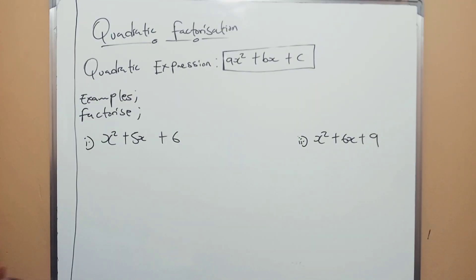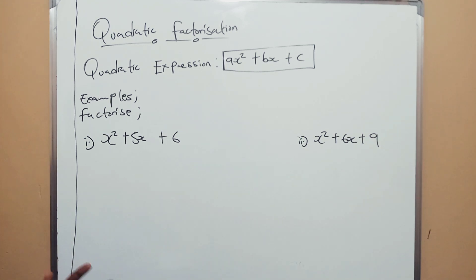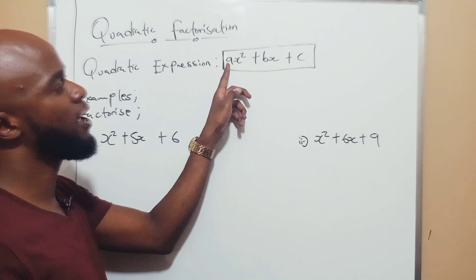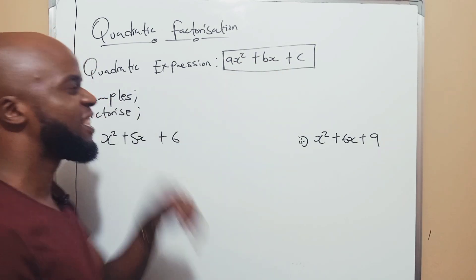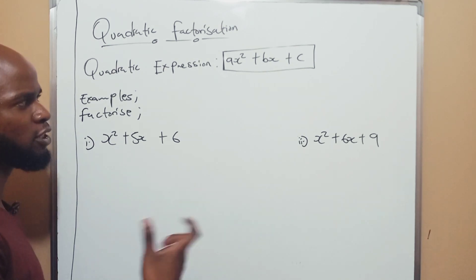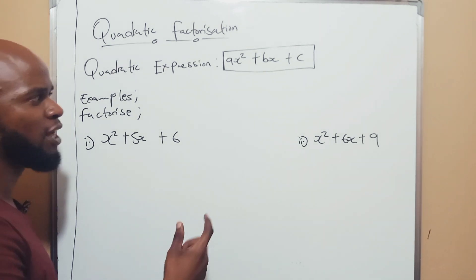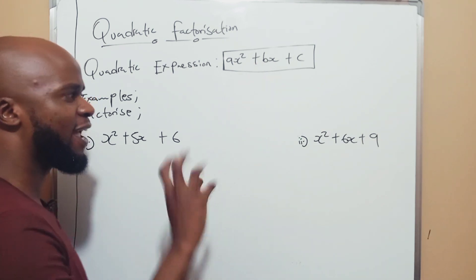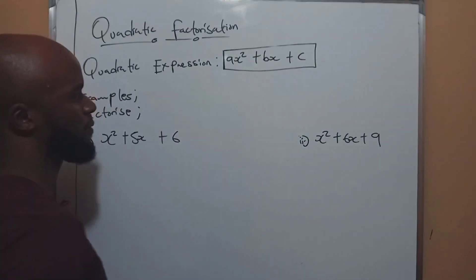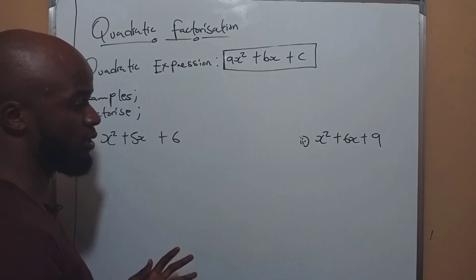Quadratic factorization is very important. We have to look at what a quadratic expression looks like. A quadratic expression looks like this: ax squared plus bx plus c. The number close to x squared is known as your a. The number that has x is known as your b. And just a number on its own is known as your c.